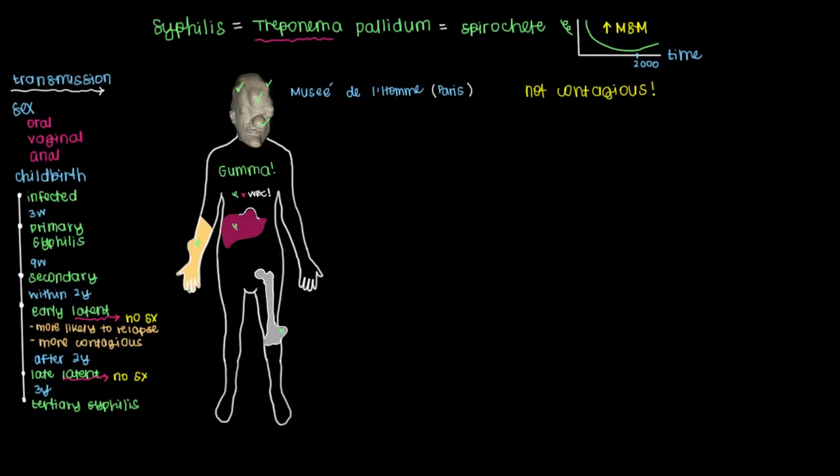Now in addition to gummas, a patient can also have what's referred to as neurosyphilis, which exactly as you might expect from the name is the invasion of the central nervous system by syphilis.